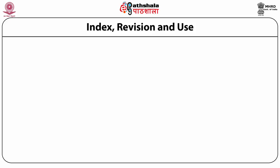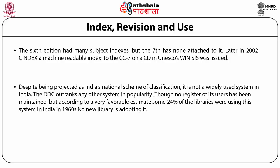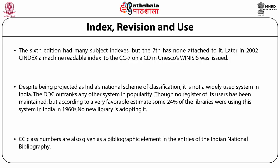The sixth edition had many subject indexes, but the seventh has none attached to it. Later, in 2002, Syndex — a machine-readable index to the seventh edition — was published on CD-ROM with UNESCO's software Venasis. Despite being projected as India's national scheme of classification, it is not widely used. The DDC outranks any other system in popularity. According to a favorable estimate, some 24% of libraries were using Colon Classification in India in the 1960s; no new libraries are adopting it. CC class numbers are also given in entries of the Indian National Bibliography, published by National Library Kolkata.